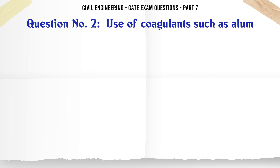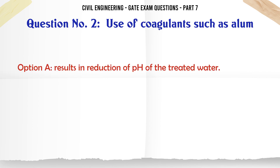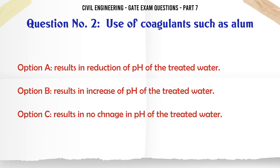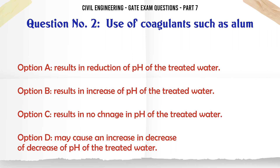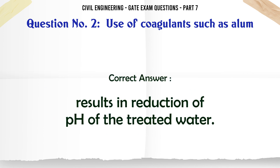Use of coagulants such as alum: A) results in reduction of pH of the treated water, B) results in increase of pH of the treated water, C) results in no change in pH of the treated water, D) may cause an increase or decrease of pH of the treated water. The correct answer is: results in reduction of pH of the treated water.